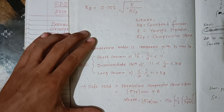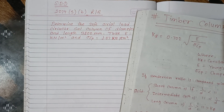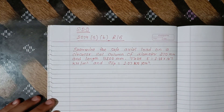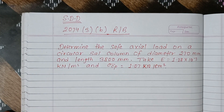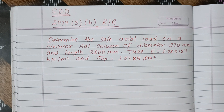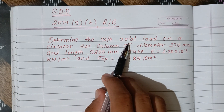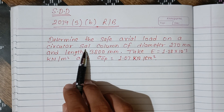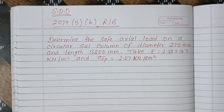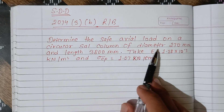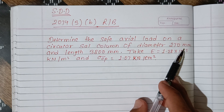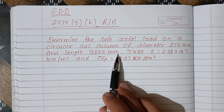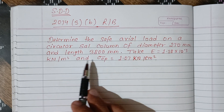Now let's solve the question. Determine the safe axial load on a circular timber column of diameter 270 mm and effective length 3800 mm. The given values are: E = 0.5 × 10³ N/mm², and FC (σcp) = 80 N/cm² ... let me write the given data.